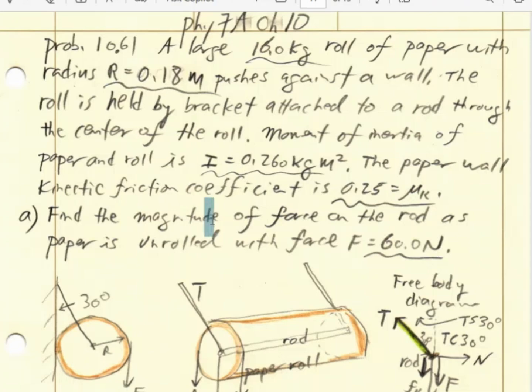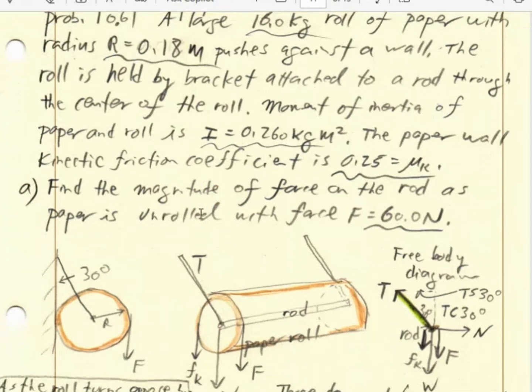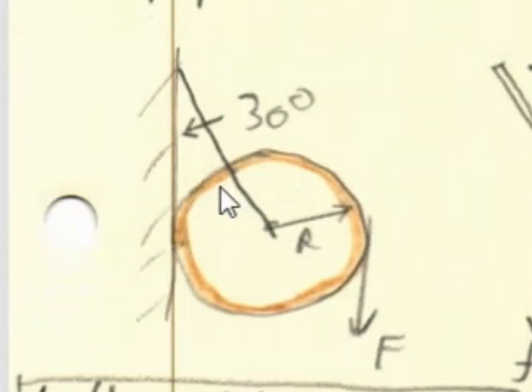What we have here is a roll of paper against a wall. There's a bracket that holds the connecting rod that goes through the center of this roll of paper. The bracket makes an angle of 30 degrees with respect to the vertical, and there's an applied force that pulls on this roll of paper.